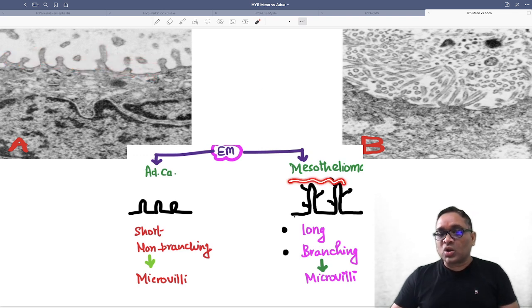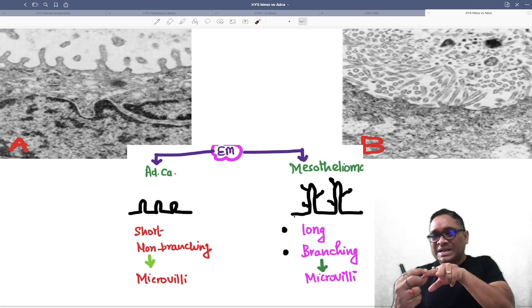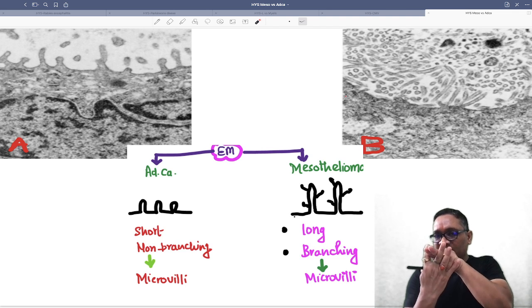Whereas in mesothelioma, you will see long branching microvilli. Here you can see long microvilli, but branching will not be seen like this because branches will be like the tips of the finger. This is the microvilli and these are the branches.